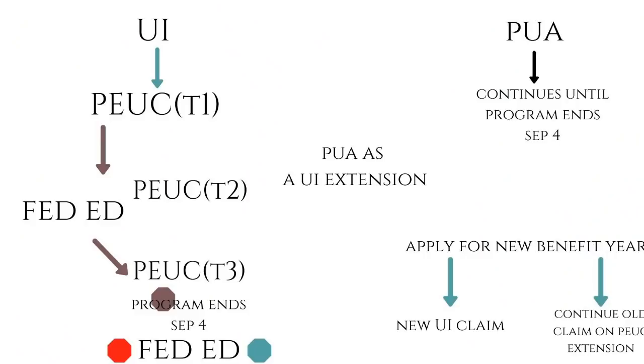Now we are in our third stimulus bill, and it has granted an extension for PEUC up until claim week ending September 4. If you start out as a traditional unemployment claim, once you have exhausted all of your weeks of UI, you will then move on to a PEUC extension. If your PEUC extension expired and there was a large enough lapse between one stimulus bill going into action and the next, then you might have been kicked into Fed Ed.